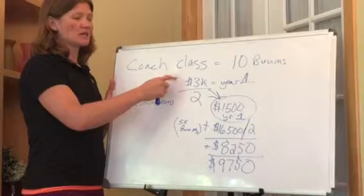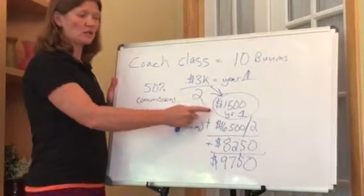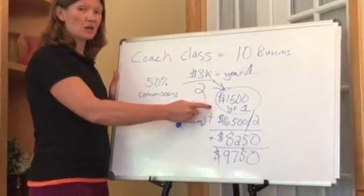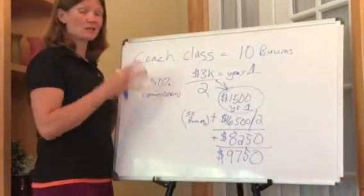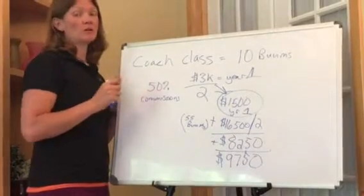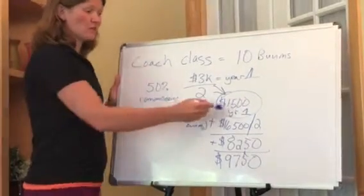you have to take that 3,000 divided by two to get the $1,500 commission back off of these boomerangs. Because again, coach class, you only make 50% of your commissions. So you get $1,500.